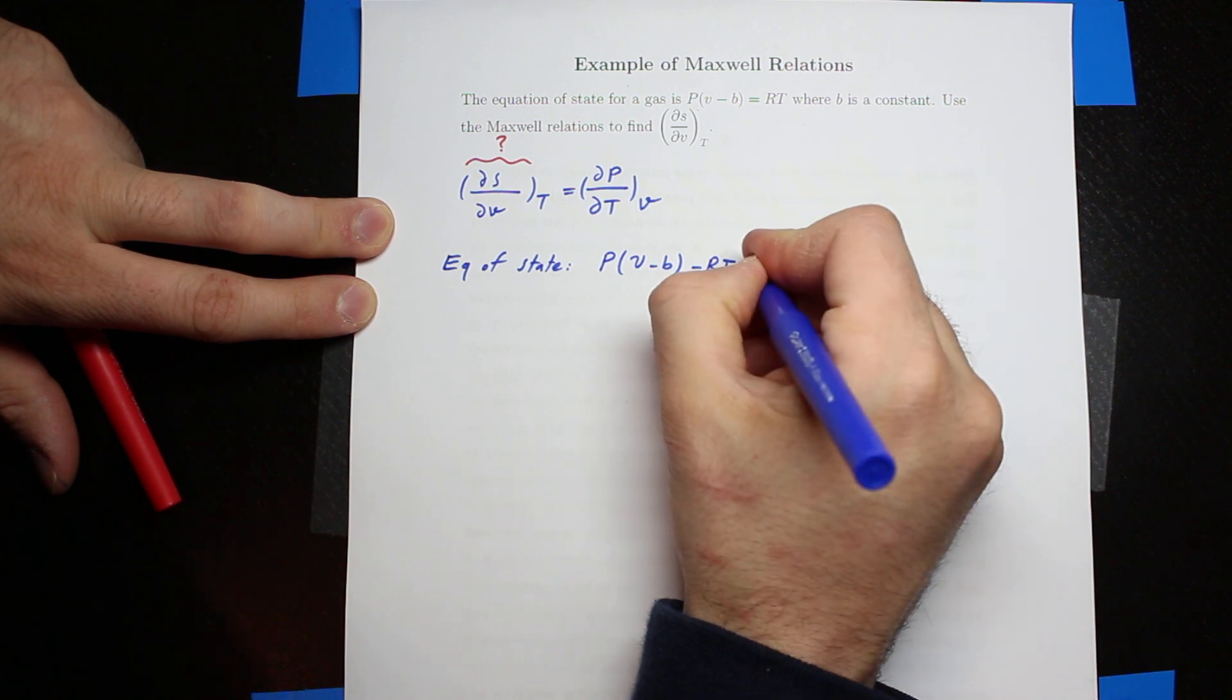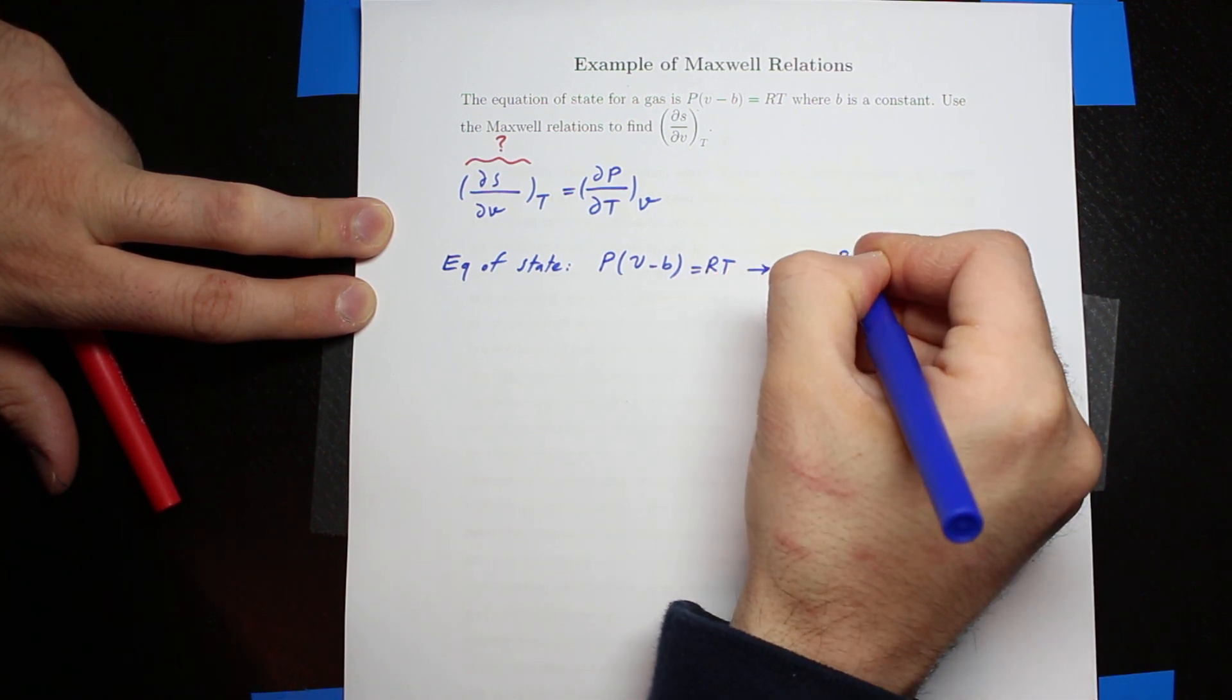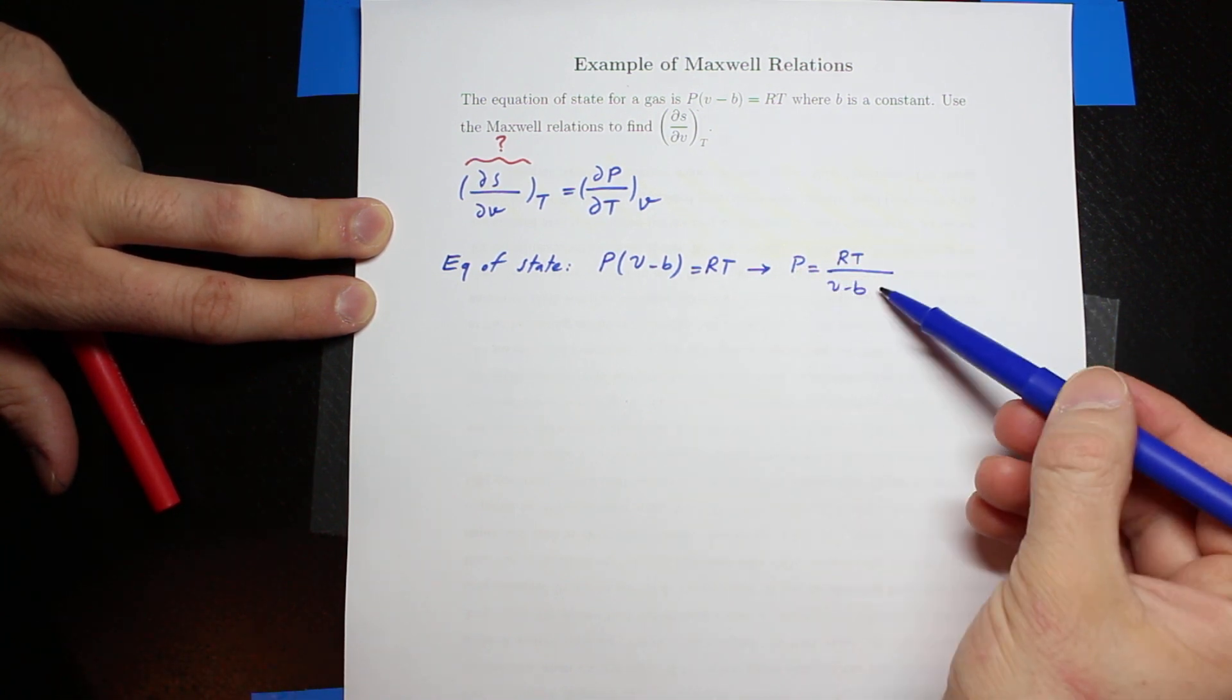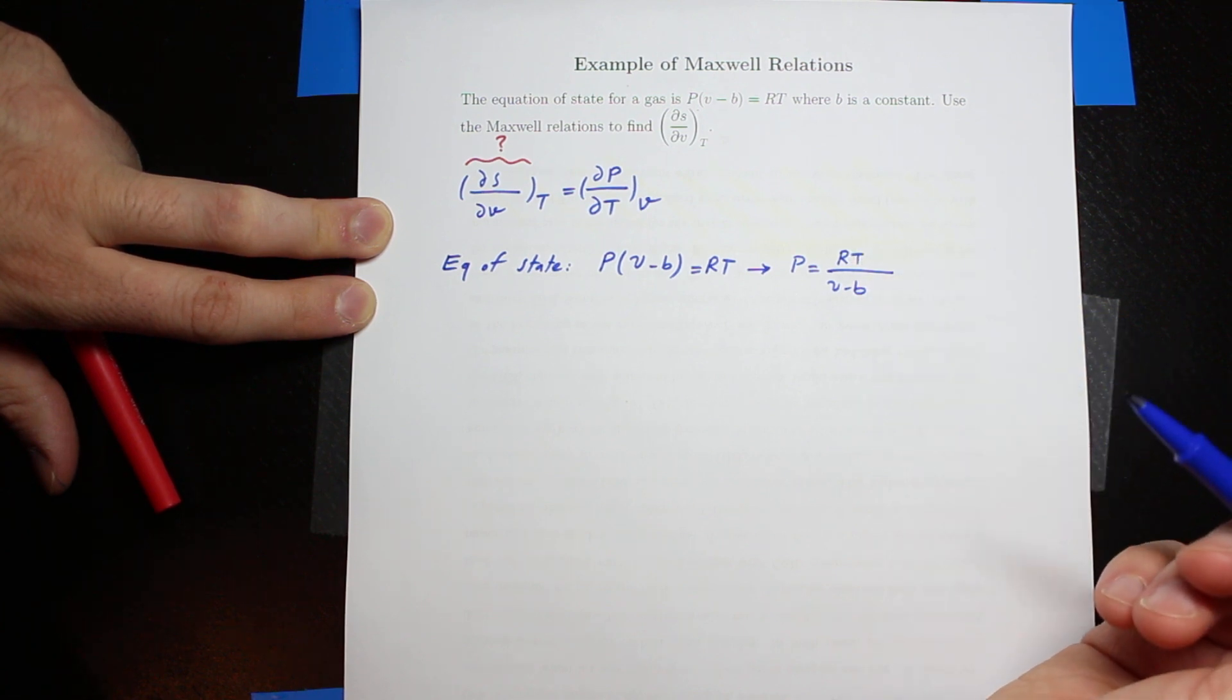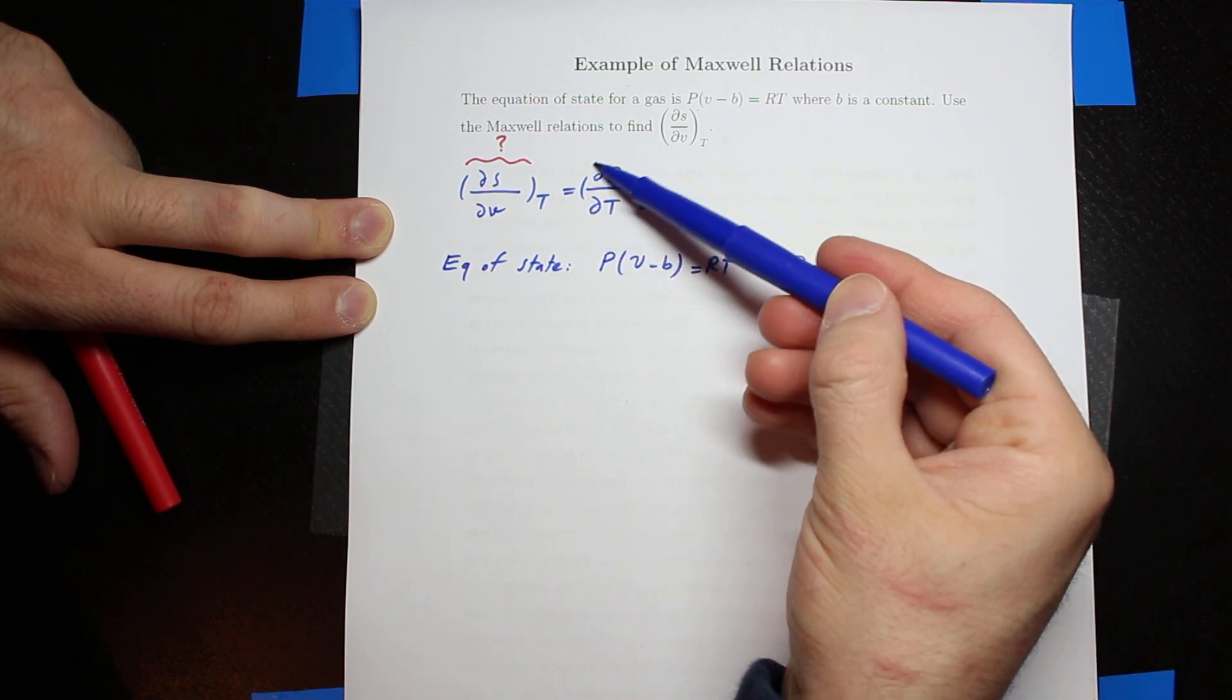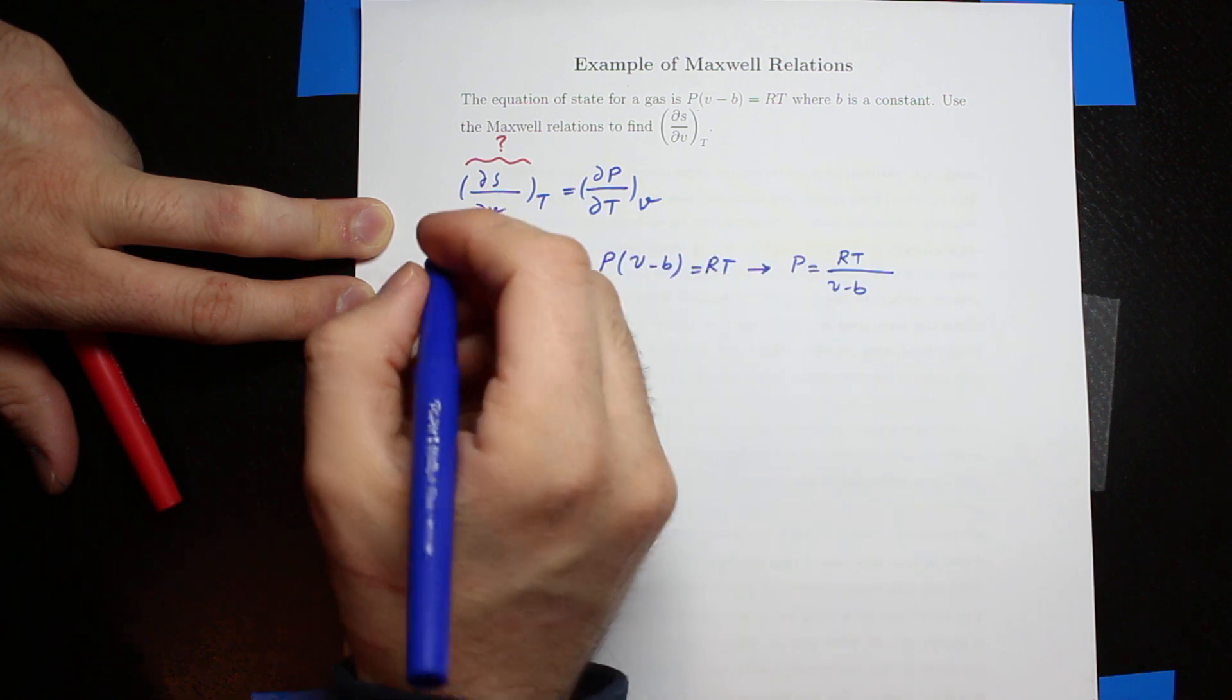Based on that, pressure for this particular gas is RT/(V-B), where V is the specific volume, B is a constant, R is the gas constant, and T is the temperature. Now what I want to do is apply this right-hand side on this pressure equation.